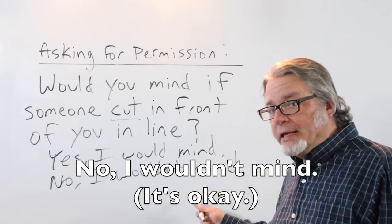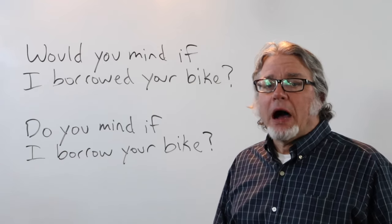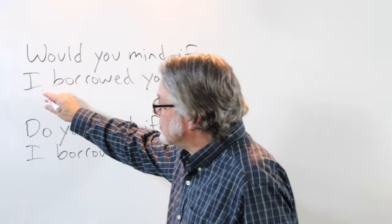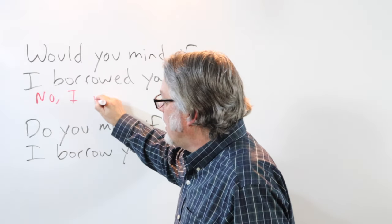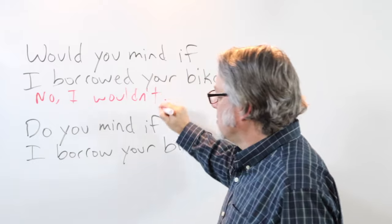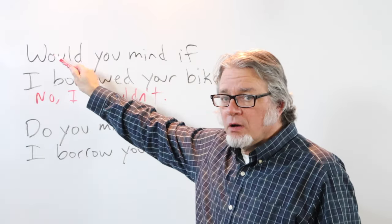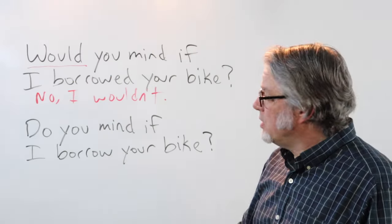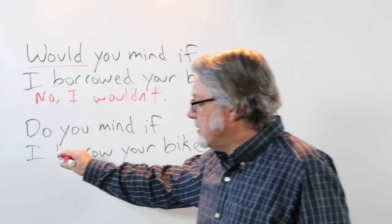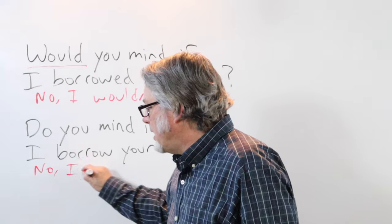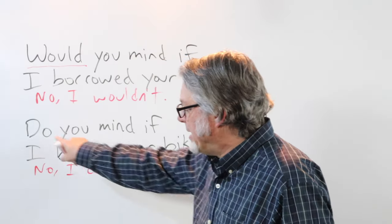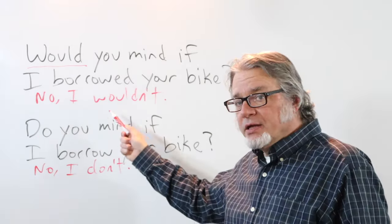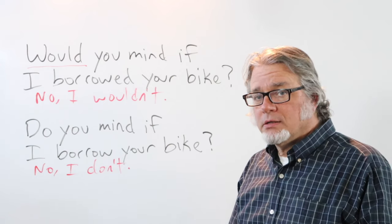If it's okay for someone to cut in line in front of you, you could say 'no, I wouldn't mind' — this means it's okay. Similarly: 'would you mind if I borrowed your bike?' If it's okay, the answer is 'no, I wouldn't.' If you start with 'do' — 'do you mind if I borrow your bike?' — then the answer would be 'no, I don't.' The answer matches the auxiliary verb that begins the question.